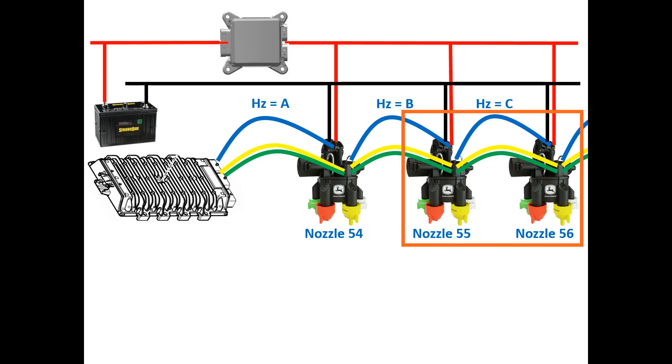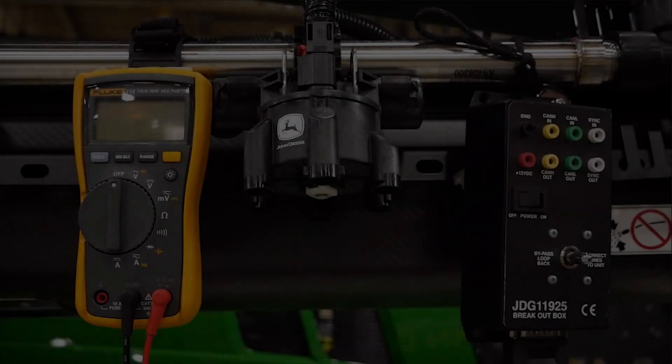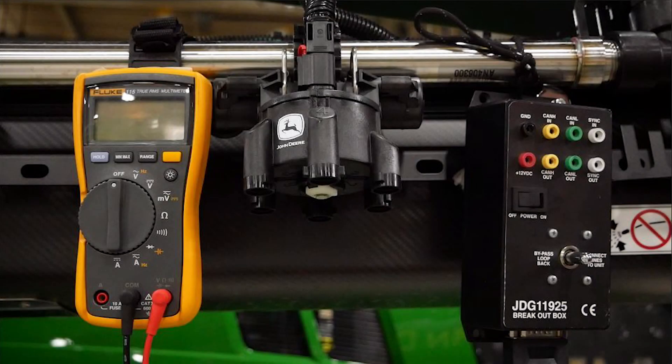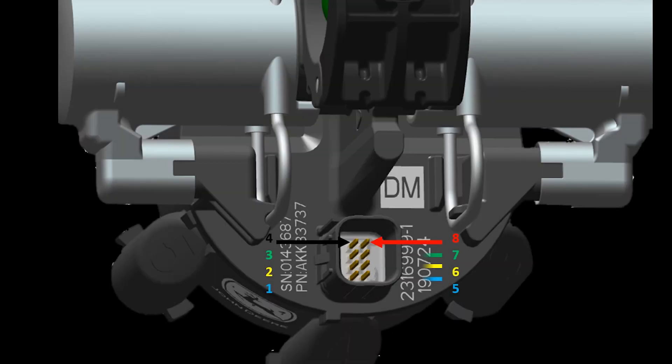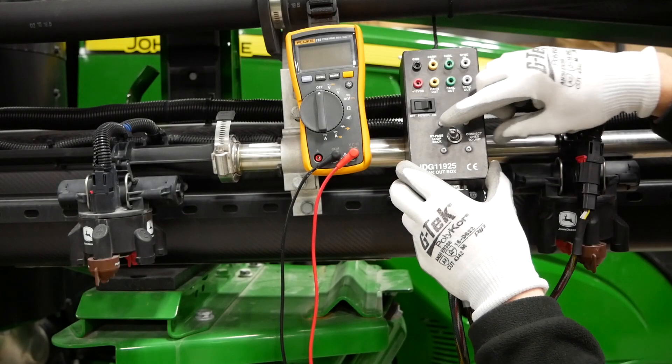While most of the next steps could be performed using only a multimeter, it is recommended to utilize the JDG 11925 test box for the following tests. Note the sink line is in an active series circuit coming into the nozzle body on pin 5 and going out on pin 1 to the next nozzle adjacent outboard.